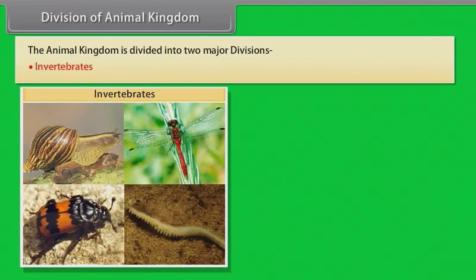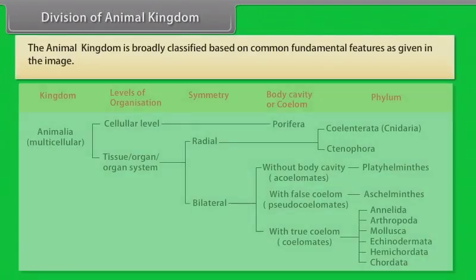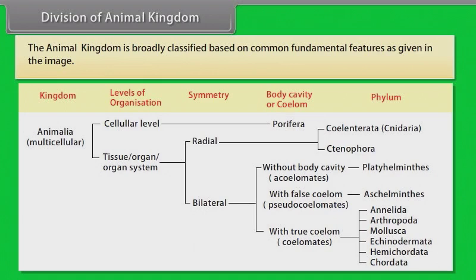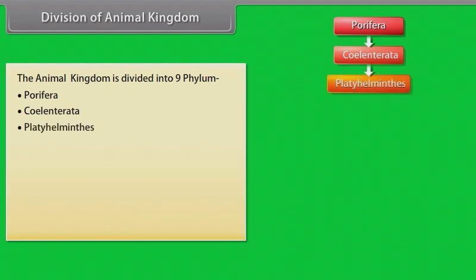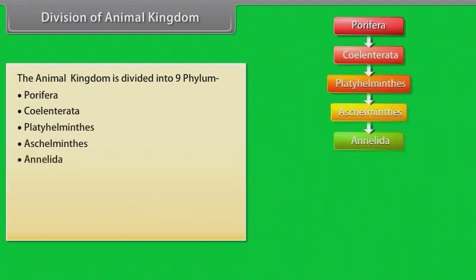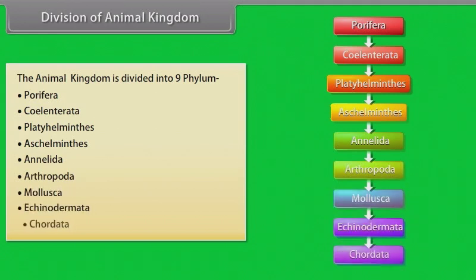Division of Animal Kingdom: The animal kingdom is divided into two major divisions — Invertebrates and Vertebrates. Invertebrates are animals that do not have a backbone; vertebrates are animals which have a backbone. The animal kingdom is broadly classified based on common fundamental features. It is divided into nine phyla: Porifera, Cnidaria, Platyhelminthes, Aschelminthes, Annelida, Arthropoda, Mollusca, Echinodermata, and Chordata.